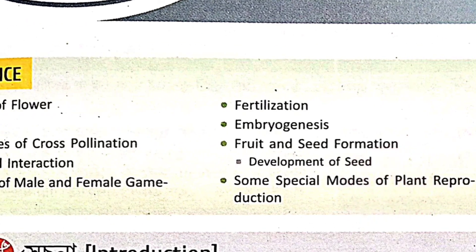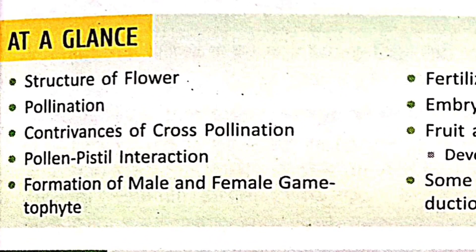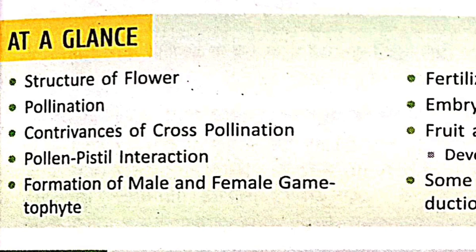First chapter is complete. Second chapter is Sexual Reproduction in Flowering Plants. The structure of the flower is important - look at the stigma or the pistil, these are different parts. Next, pollination is important. Different types of pollination is important - definition plus example. Next, contributions of cross-pollination - cross-pollination is important.